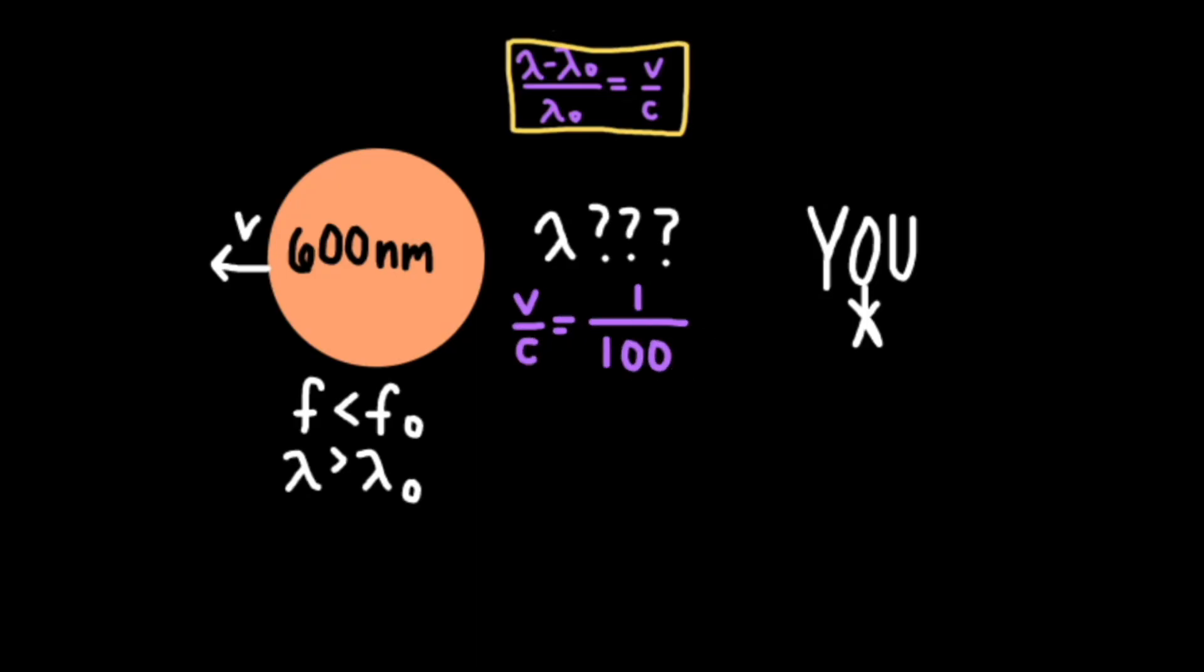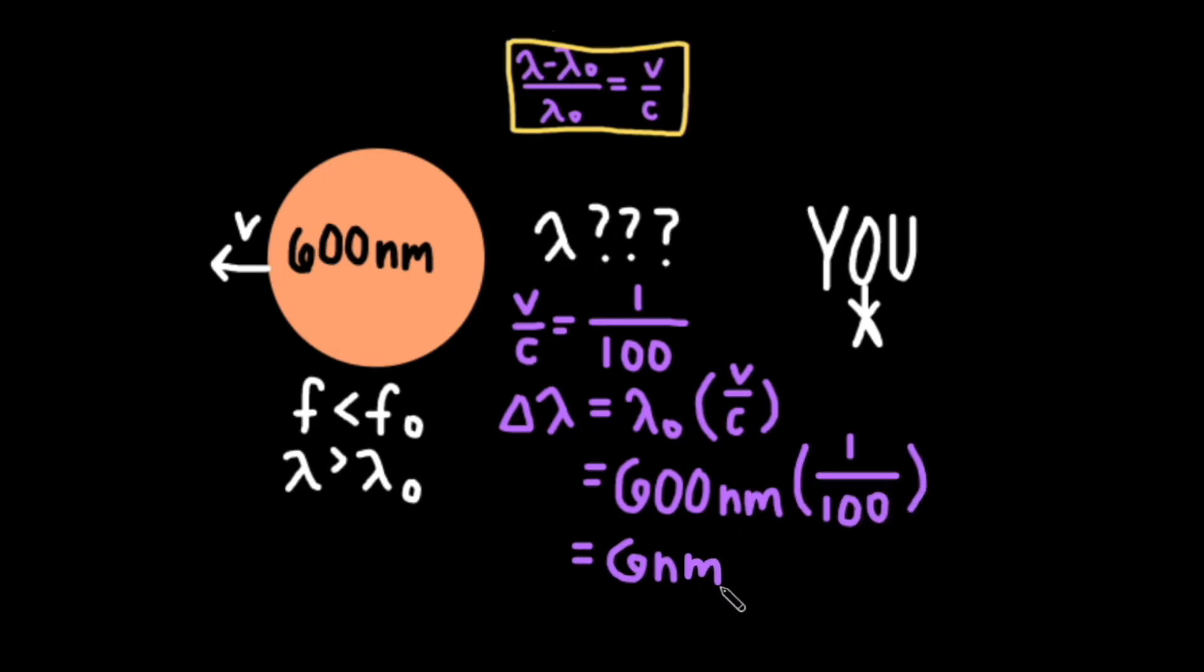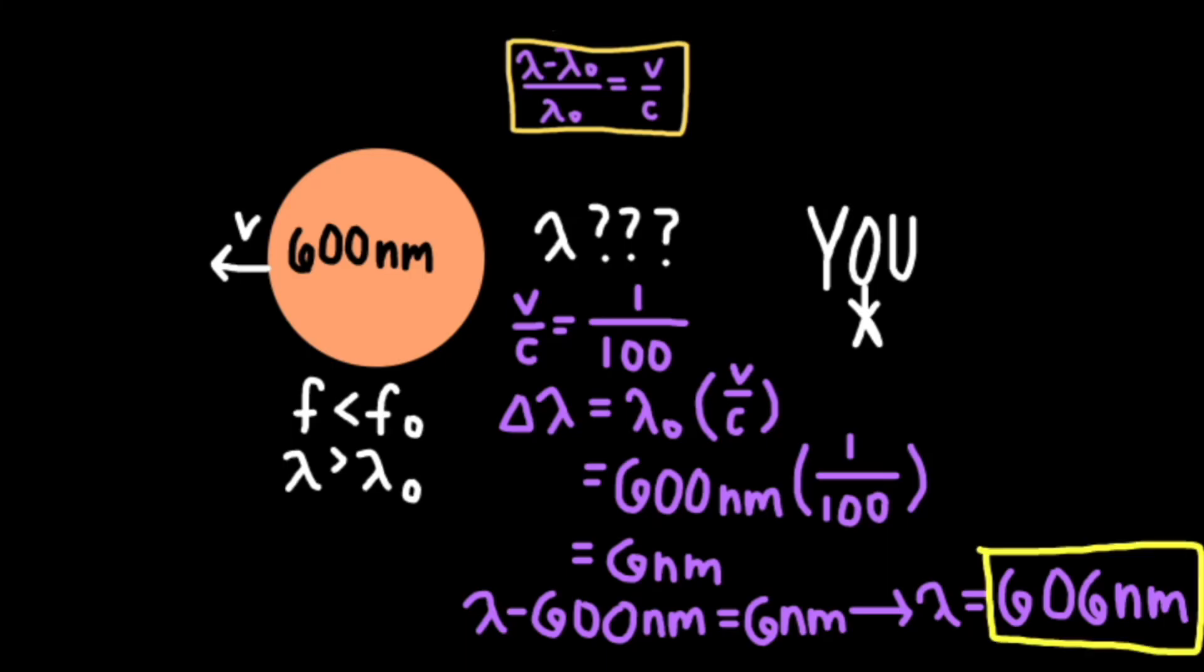It's moving at 1/100th the speed of light, so v over c is 1 over 100. The intrinsic wavelength we know to be 600 nanometers, so the change in wavelength is 1/100 times 600 nanometers, or 6 nanometers. The change in wavelength is lambda minus lambda naught (λ - λ₀), so lambda equals 600 nanometers plus 6 nanometers, which is 606 nanometers. That's the wavelength that we observe, and as expected, it's larger than the star's intrinsic wavelength of 600 nanometers. Everything checks out!